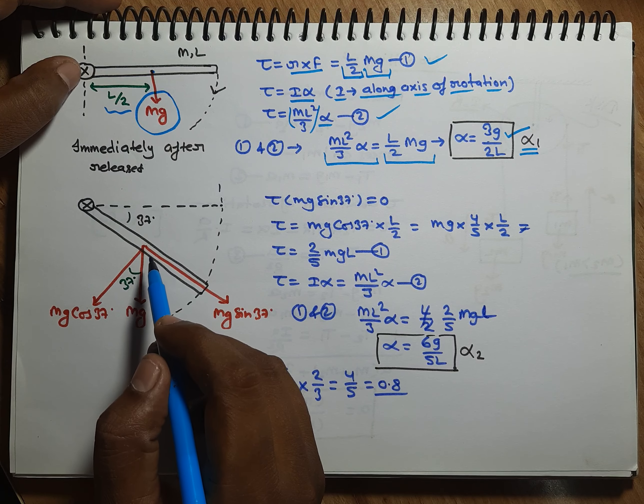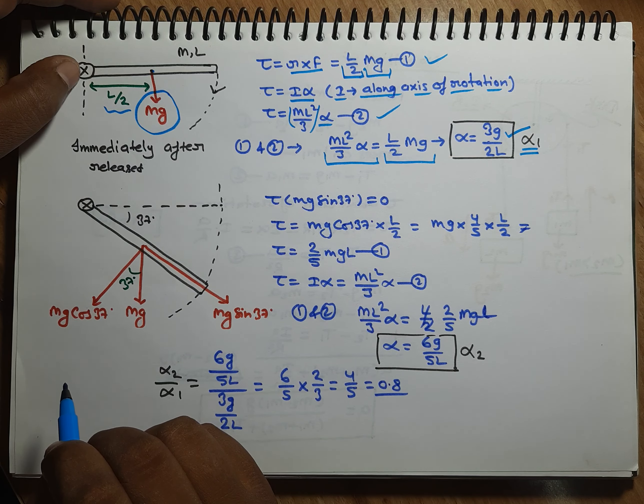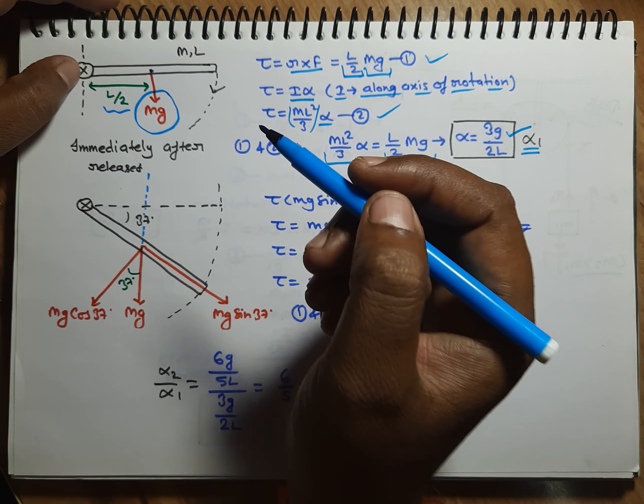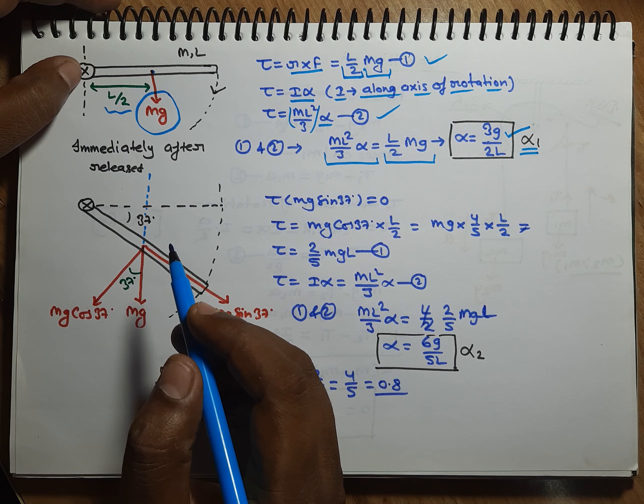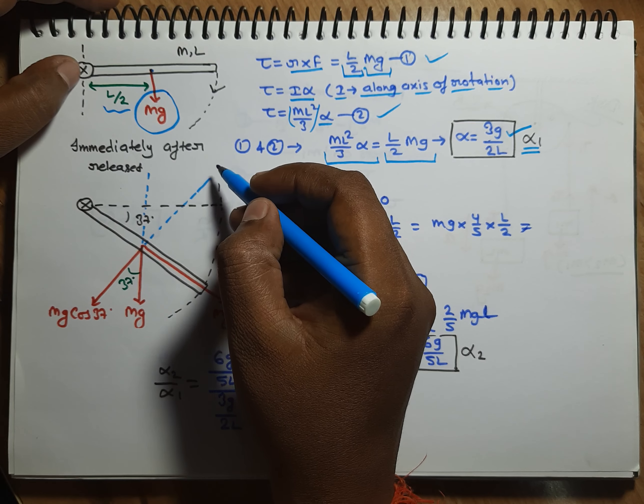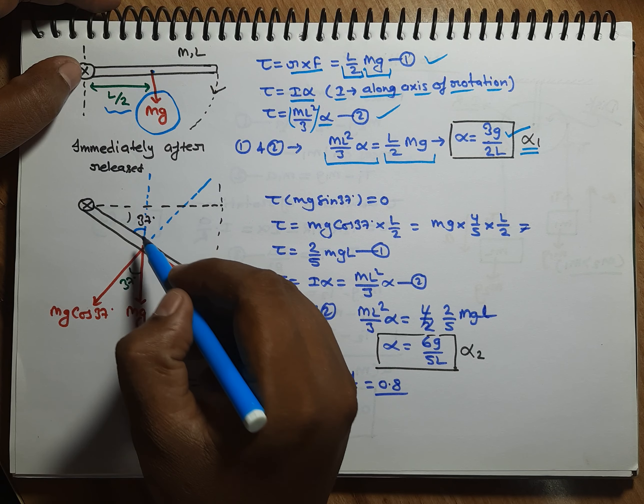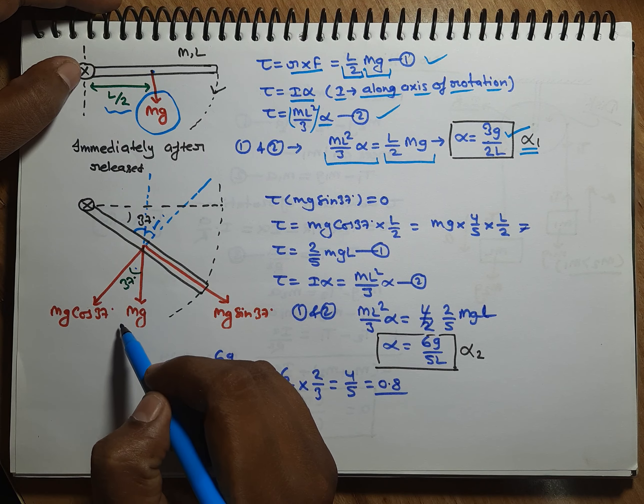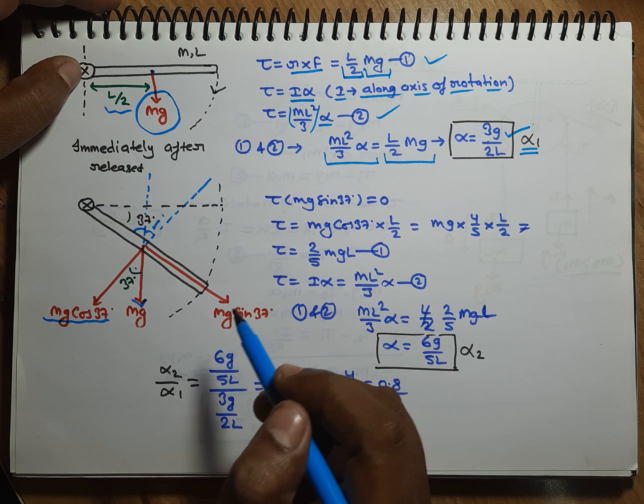Now friends, if we talk about after traveling 37 degrees, friends when it has traveled 37 degrees, if we talk about angles, friends this is 37, so this will be 53, this will be 53, so this one will be 37. And friends if this is 37, then this will also be 37. In this way, if this is 37, then friends, Mg's component perpendicular to this rod will be Mg cos 37, and along this rod will be Mg sin 37.